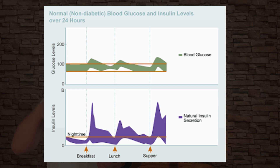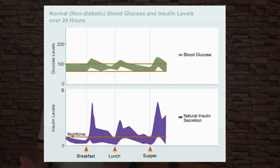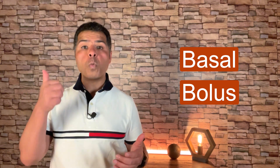Insulin secretion in healthy individuals without diabetes is characterized by continuous basal secretions with peaks or boluses that occur soon after meals. Basal insulin secretion is the amount of insulin secreted in the fasting state in the absence of exogenous stimuli. Bolus insulin is the insulin used to control the postprandial rise in blood glucose level.